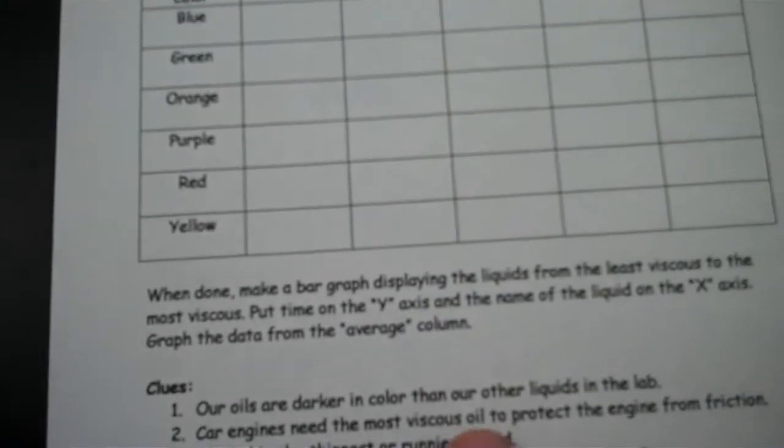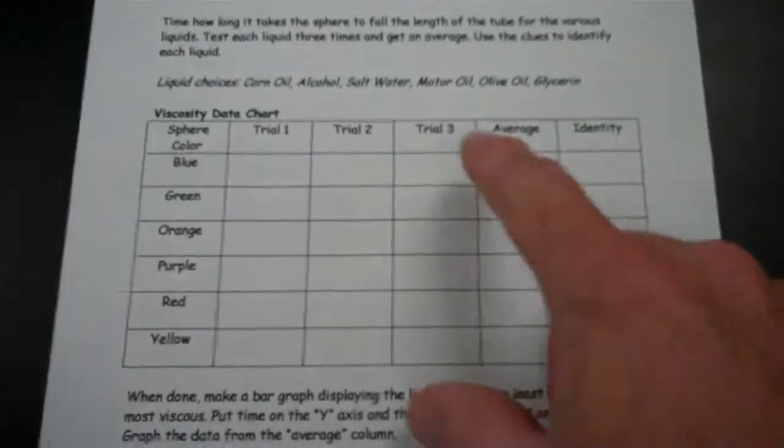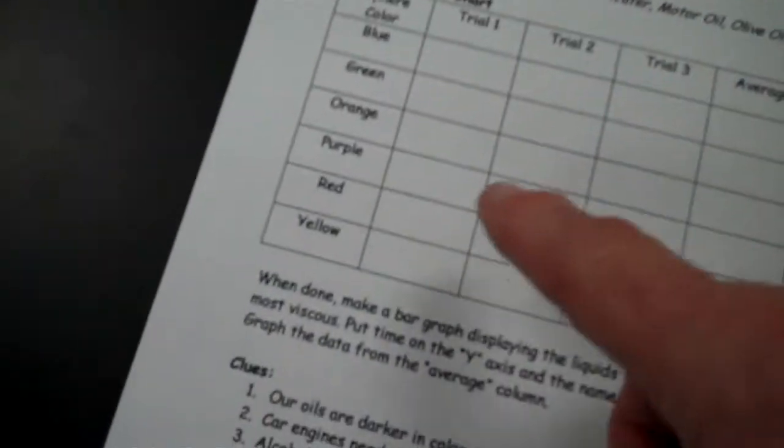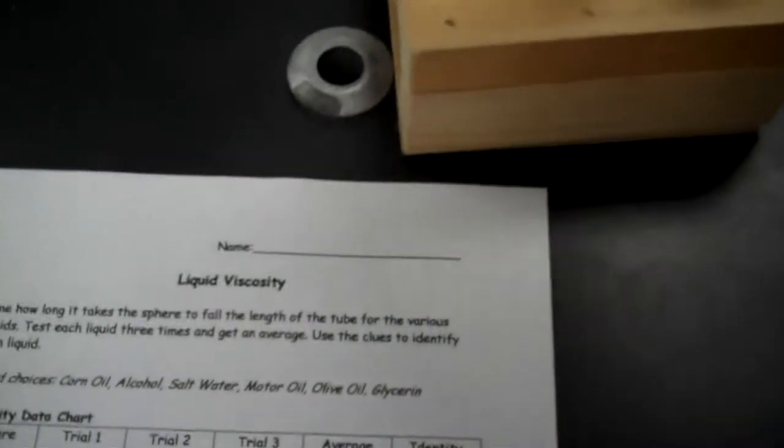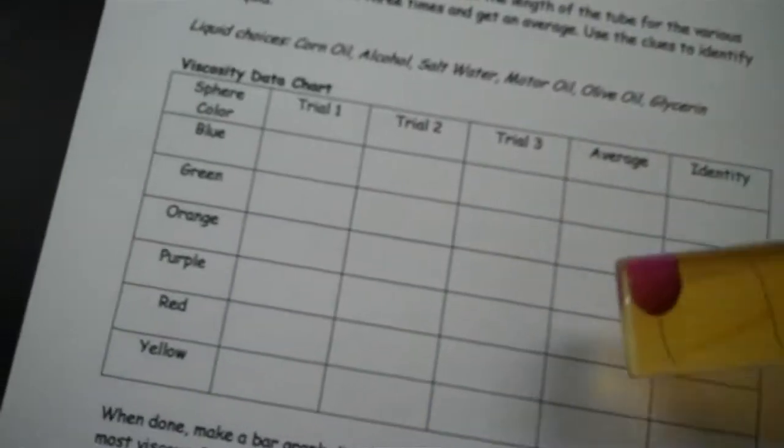Second clue says car engines need the most viscous oil to protect the engine from friction. So motor oil is in cars. We look at the three oils—one, two, three—and we look at their times.